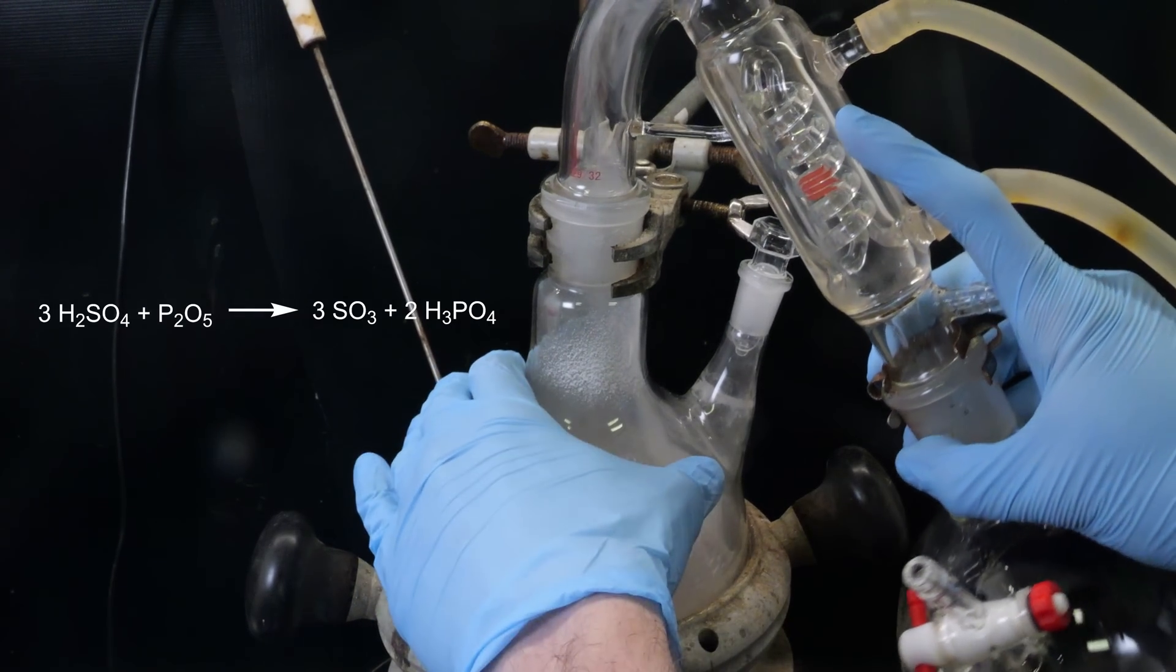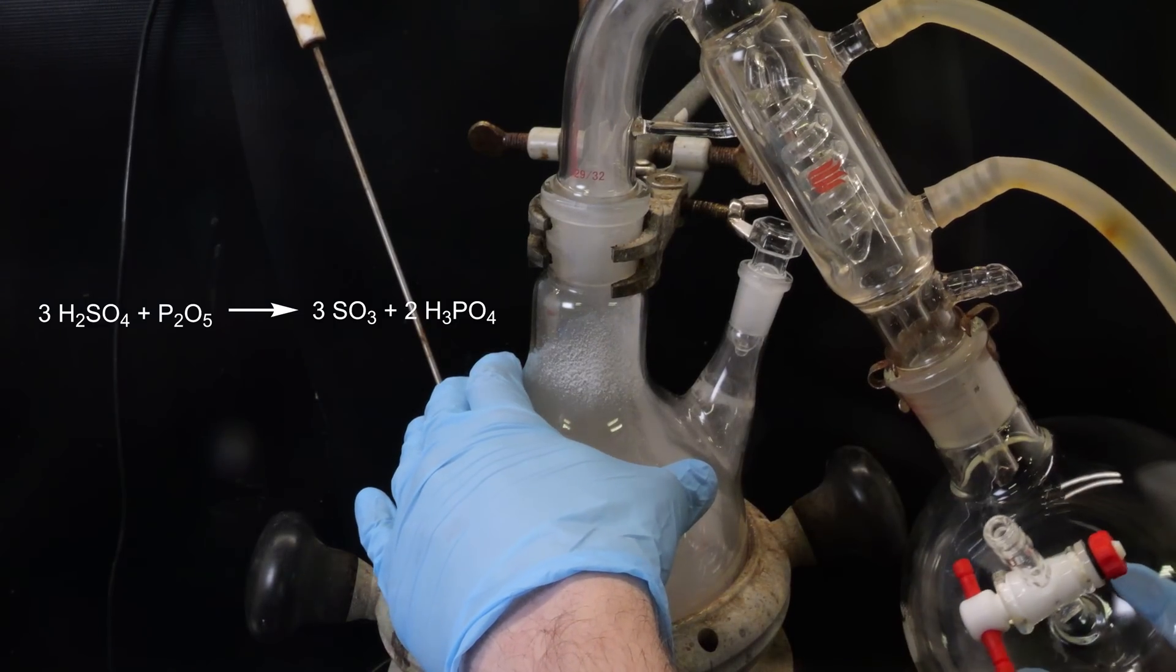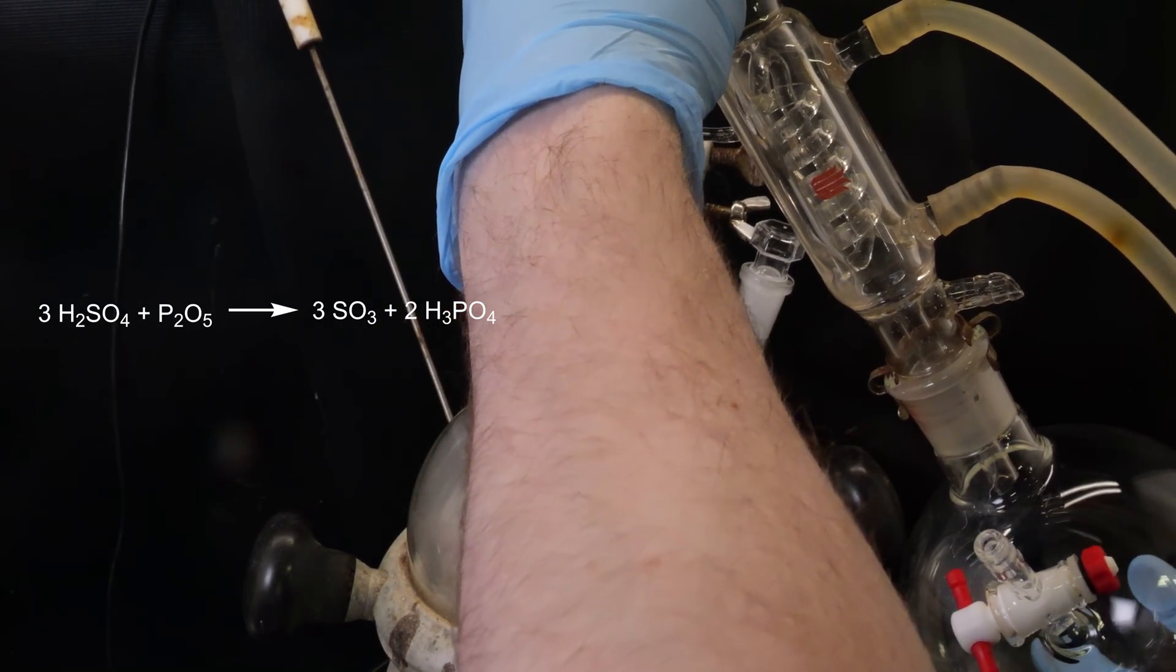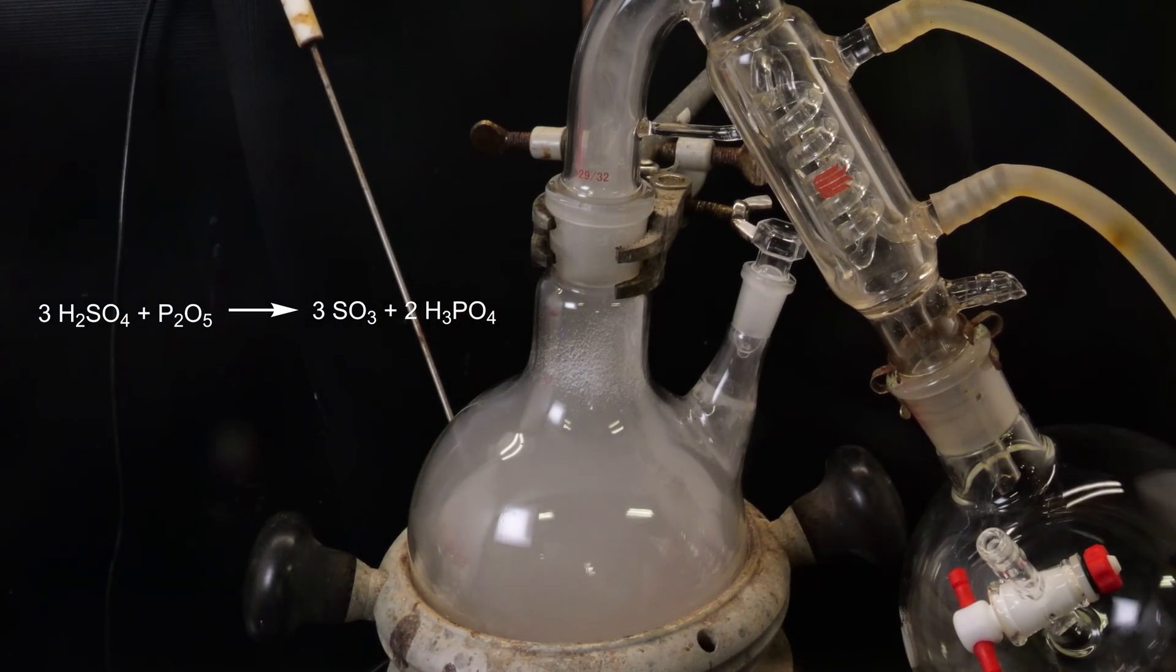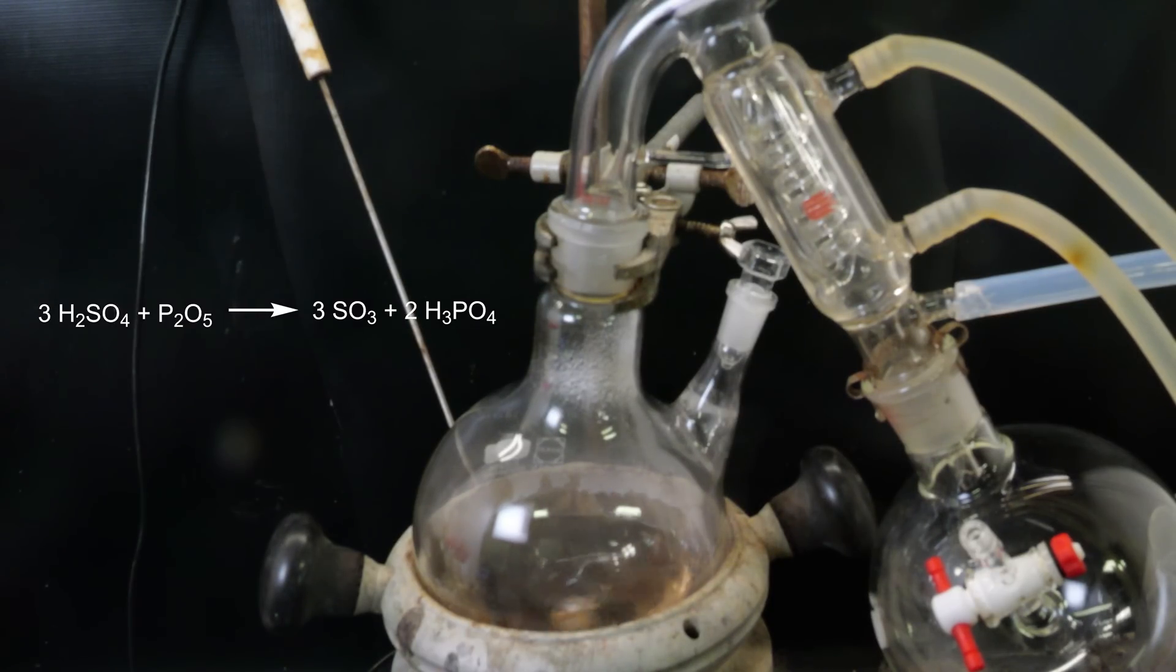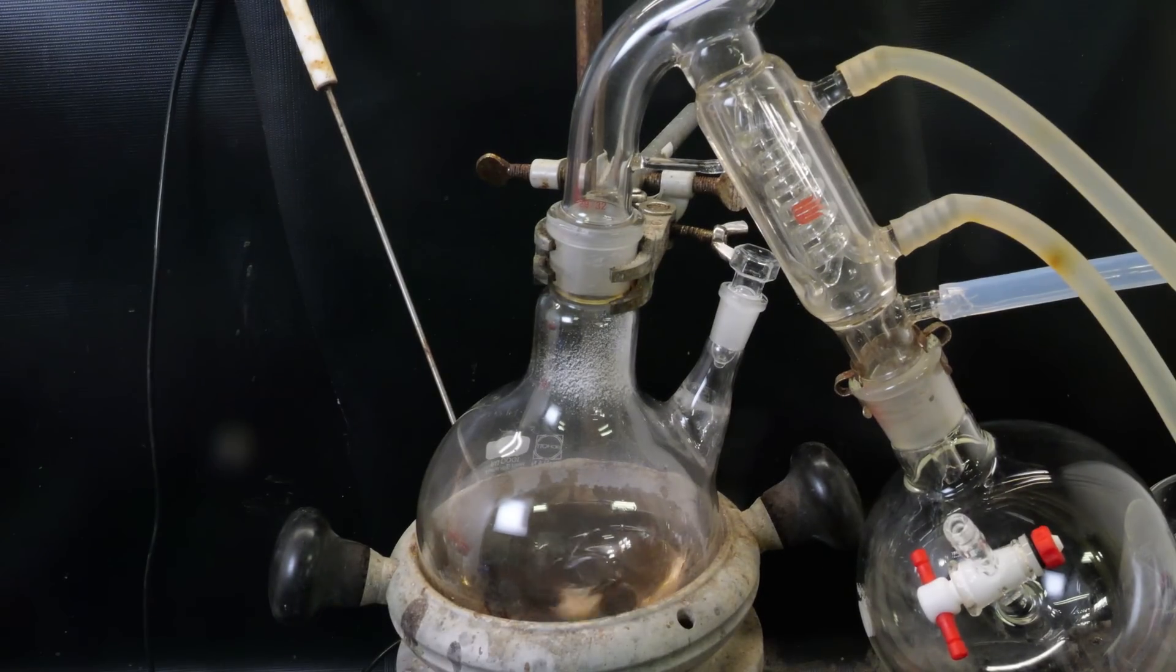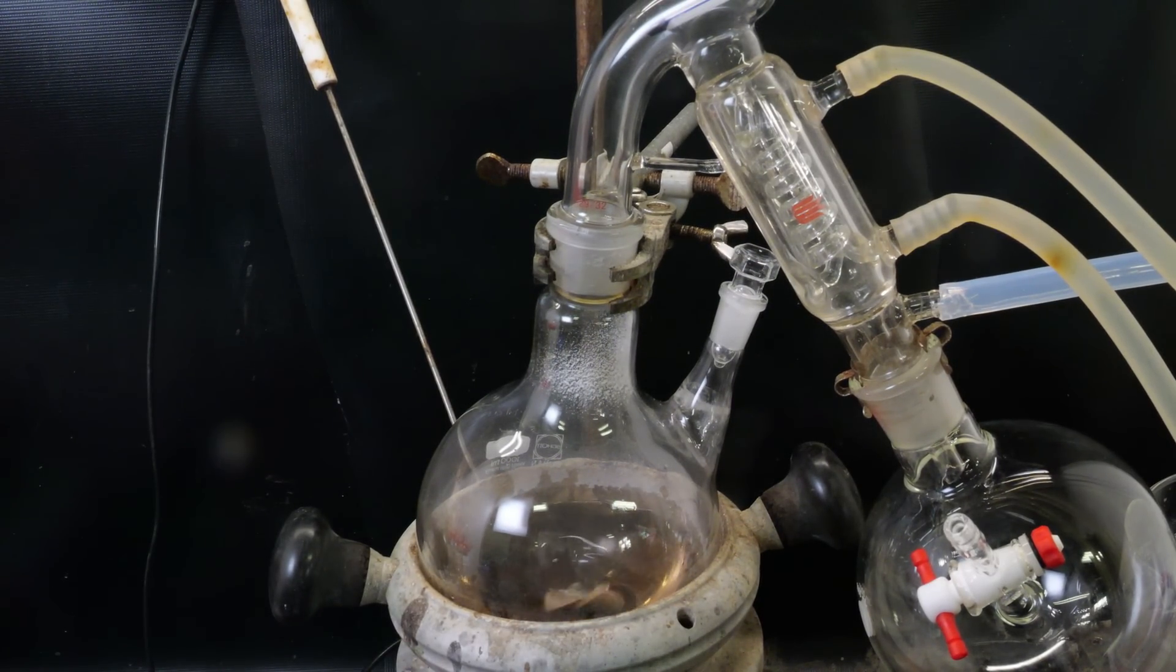I attach a short path distillation apparatus to try to distill over the sulfur trioxide, which has a boiling point of only 45C and a close melting point of 17C. However, since this short path was apparently too short, only when an ice bath was added to the receiving flask would the sulfur trioxide actually deposit from the gas phase.